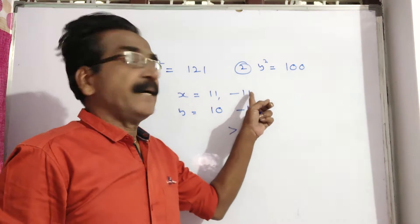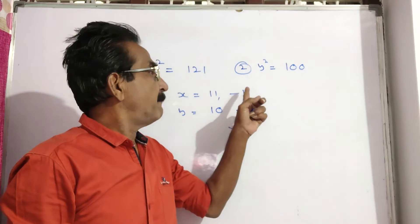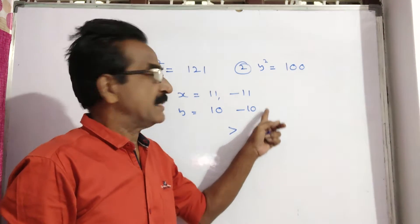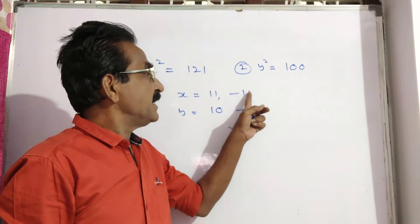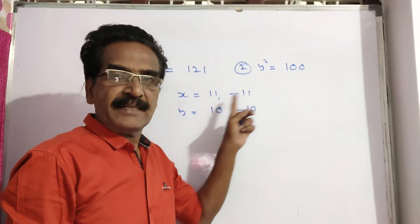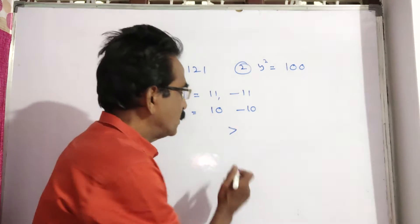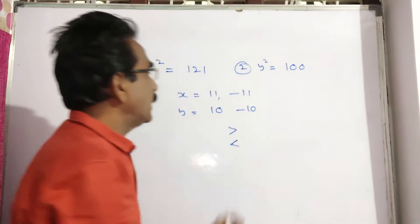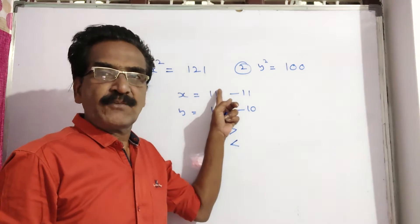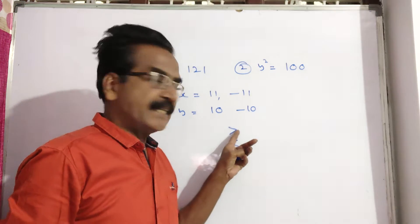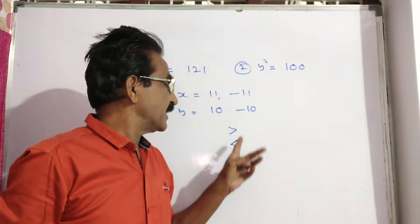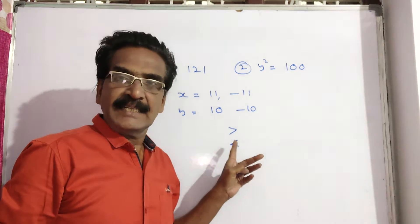If you take minus 11 and compare it with those two values of y, minus 11 is less than 10. So when comparing the first x value (+11) we get greater than, but when comparing the second x value (−11) we get less than.